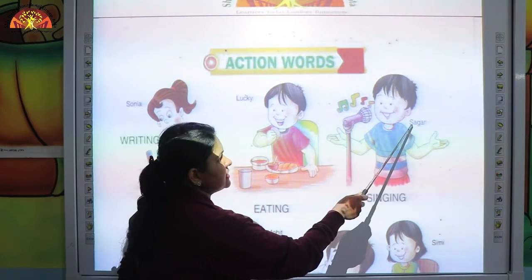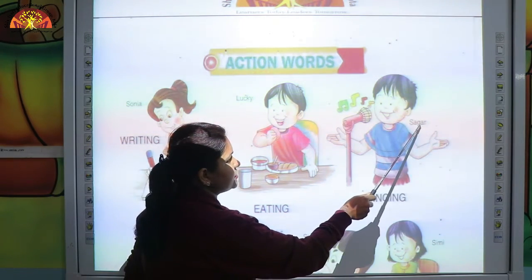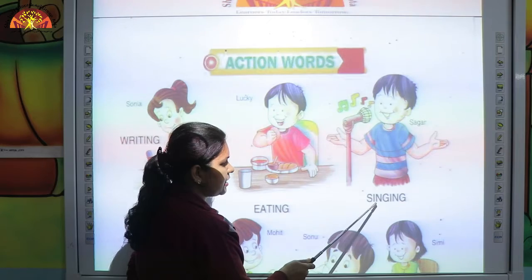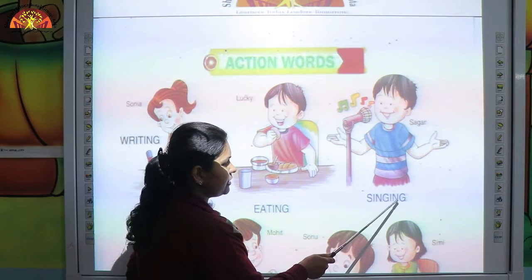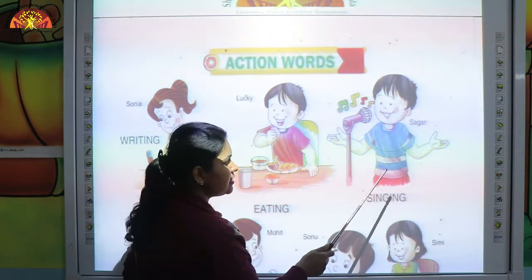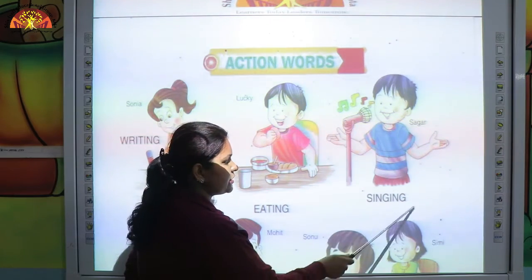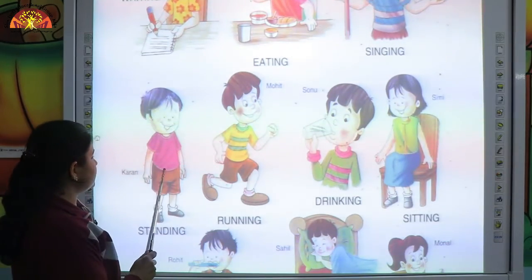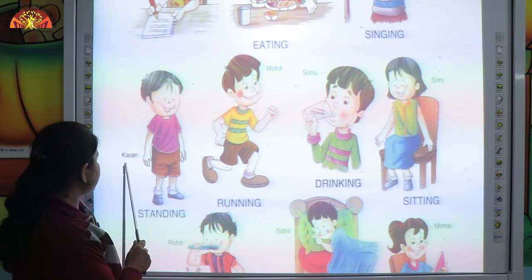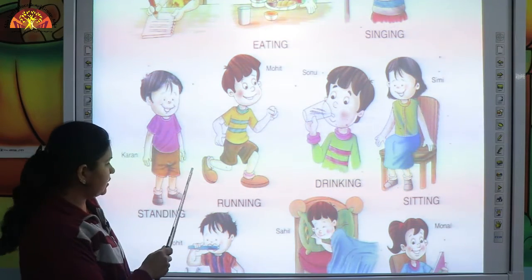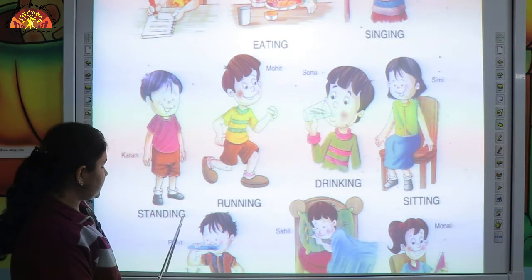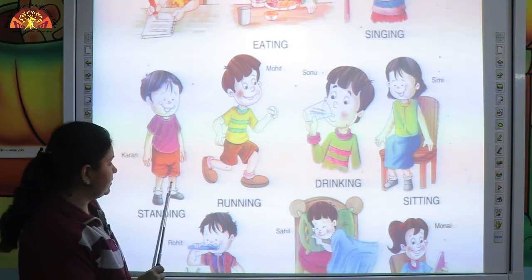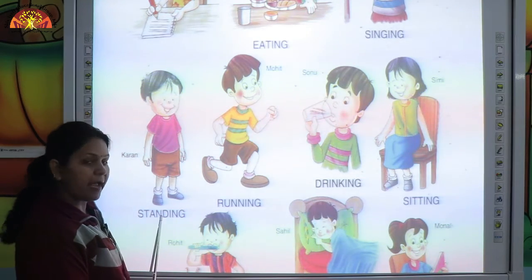This boy is Sagar. Sagar is singing — S-I-N-G-I-N-G, singing. So singing is an action word. This is Karan. Karan is standing — S-T-A-N-D-I-N-G, standing. So standing is an action word.